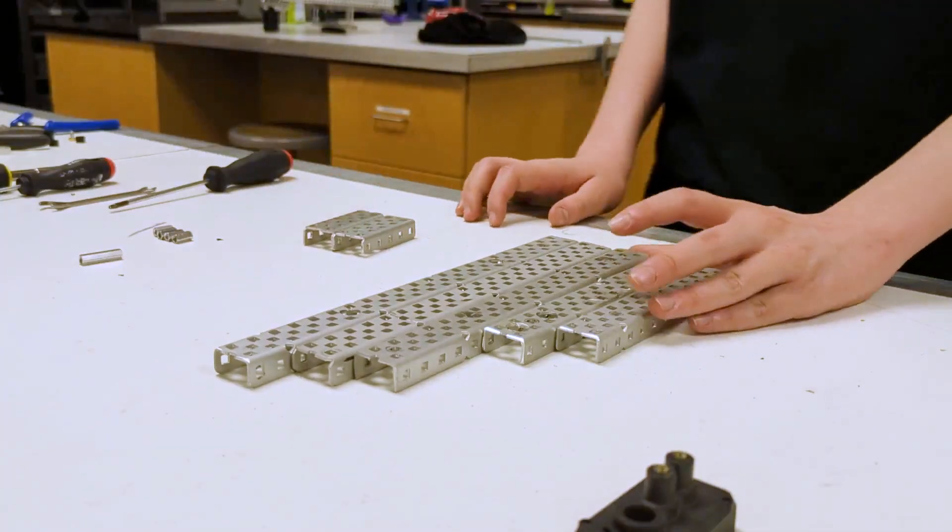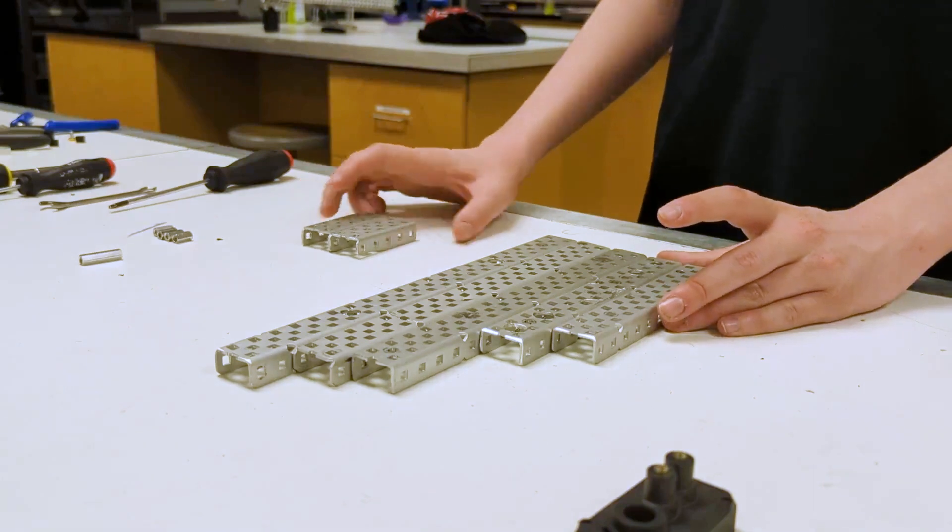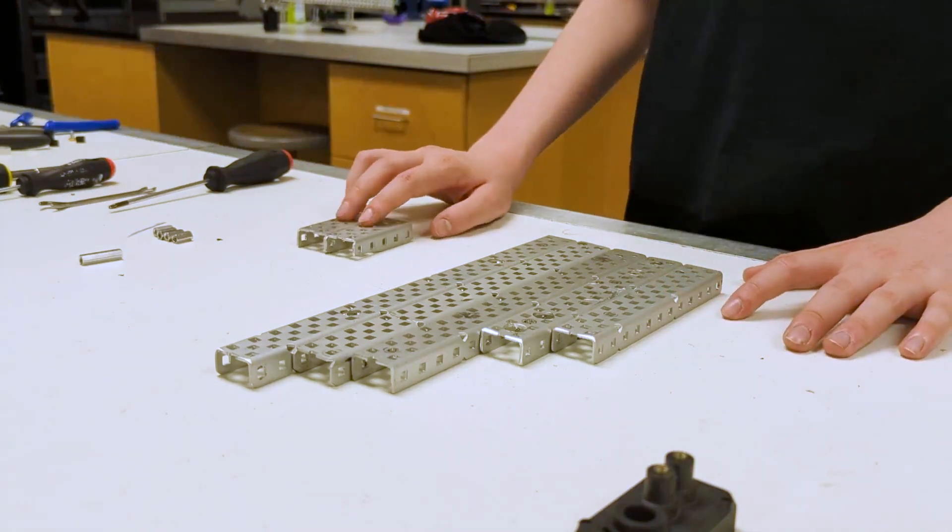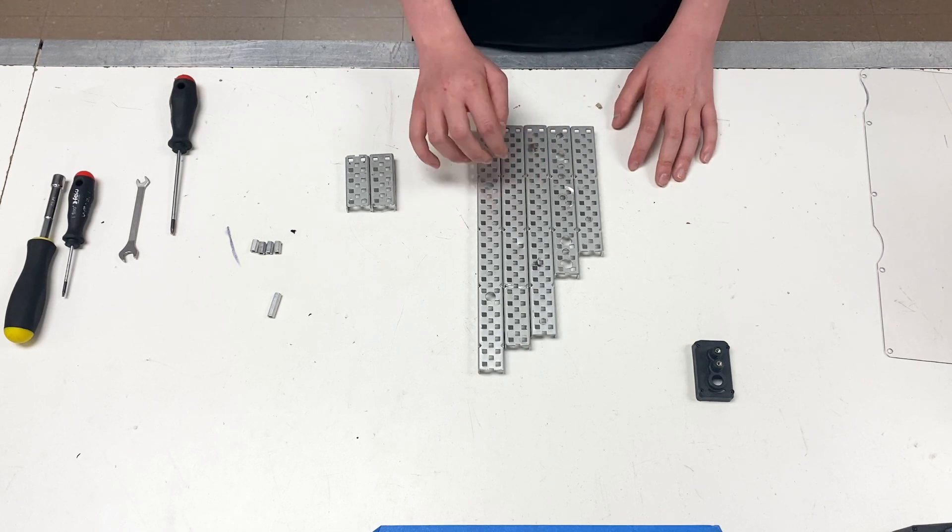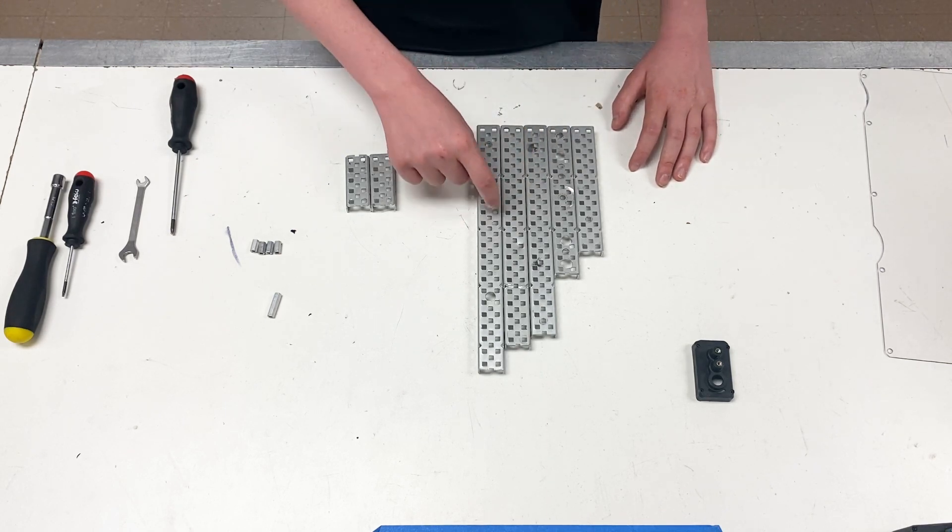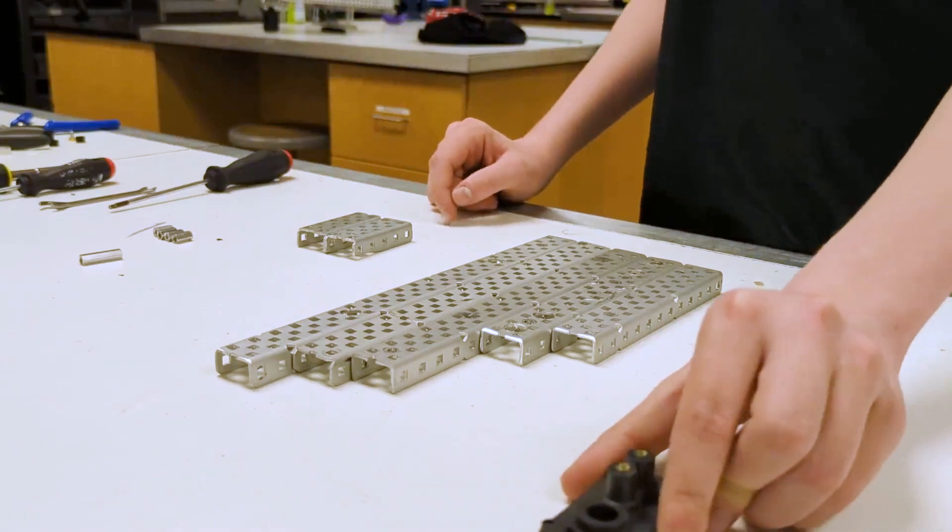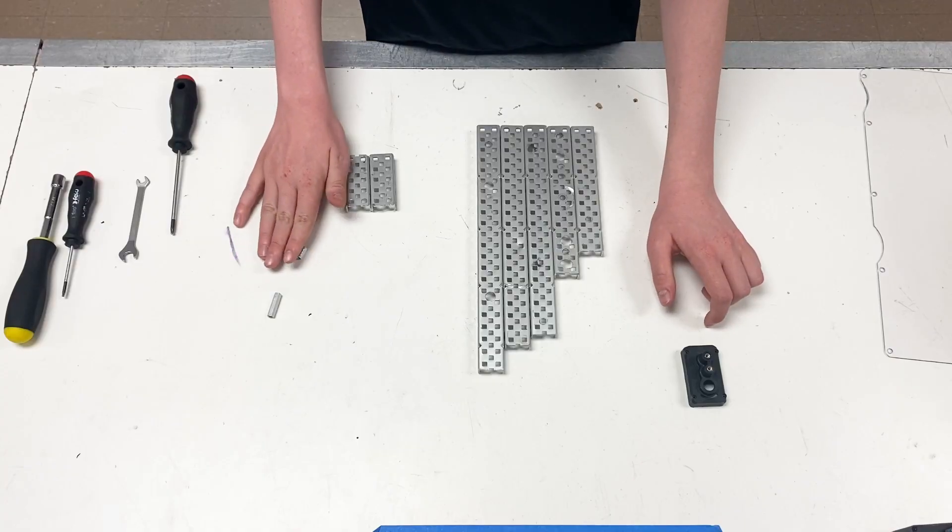Alright, let's get started on the intake assembly. The parts needed for this are two 5-hole C-channels, a 12-hole C-channel, a 14-hole C-channel, a 19-hole C-channel, a 20-hole C-channel, and a 22-hole C-channel. You're also going to need a motor cap, four half-inch standoffs,